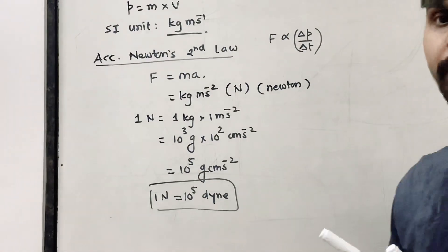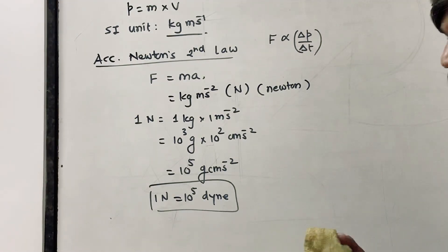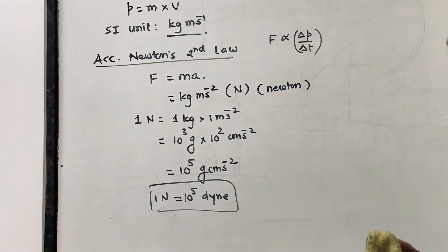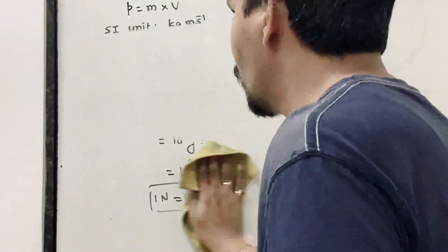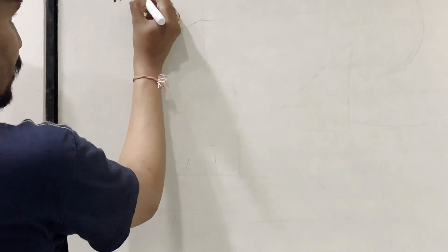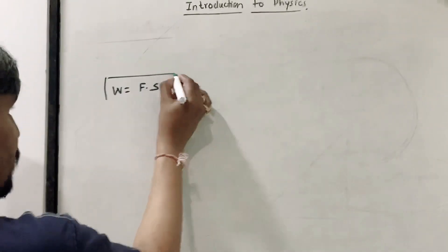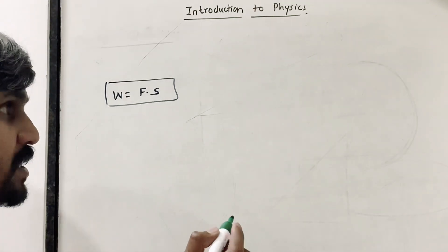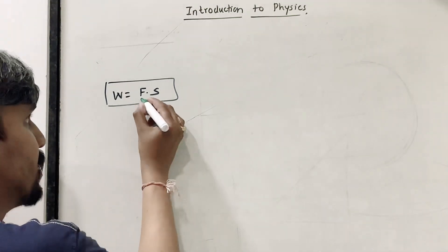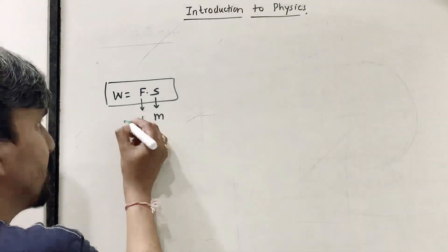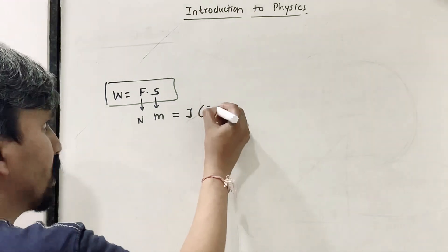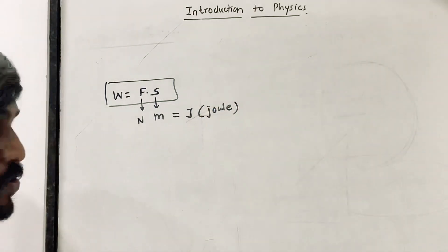Work is the product of force and displacement, so it depends on two factors: force and displacement. The SI unit of work is Newton × meter, which is written as Joule (J).